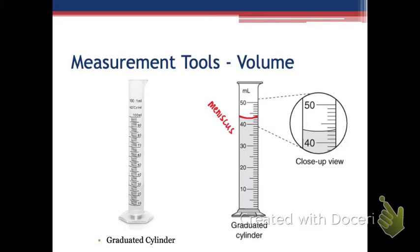The meniscus is what happens to water when it's in a glass container. Water has a lot of surface tension, so it starts to stick to the glass and pull itself up the walls of the container, making a little cup shape. We always read from the bottom of the meniscus, not the top.